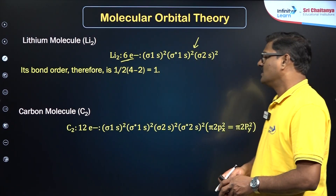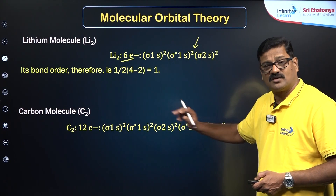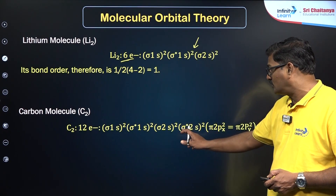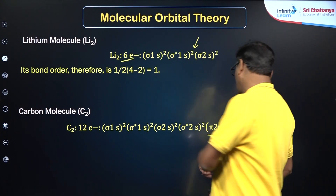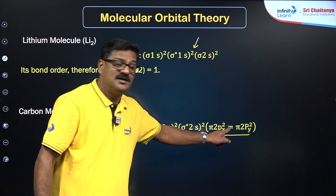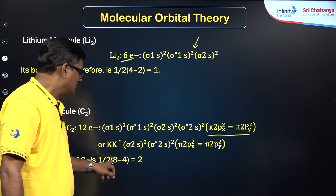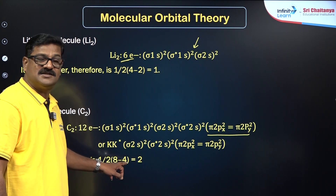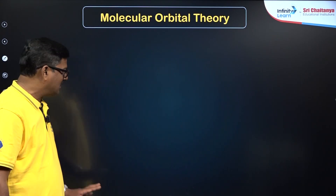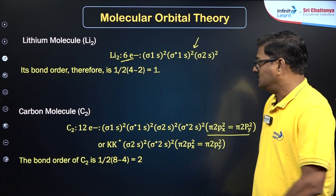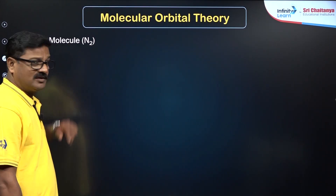For the carbon molecule C₂, two carbon atoms give 12 electrons. The configuration is σ1s² σ*1s² σ2s² σ*2s² π2px² π2py² (using the up-to-nitrogen sequence). There are 8 bonding electrons and 4 antibonding electrons, so bond order = (8 − 4)/2 = 2 — a double bond exists. There are no unpaired electrons, so C₂ is diamagnetic.